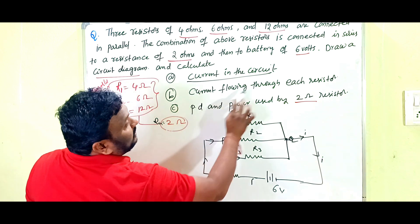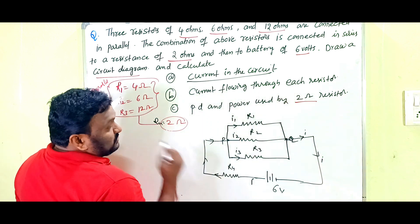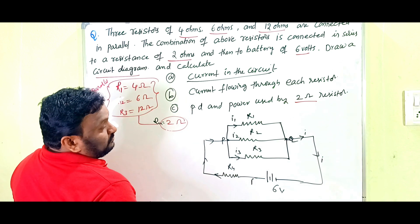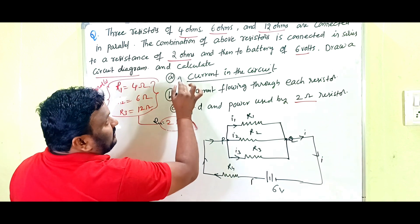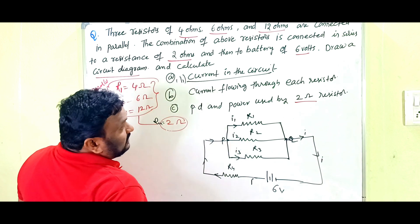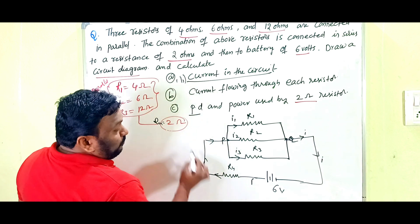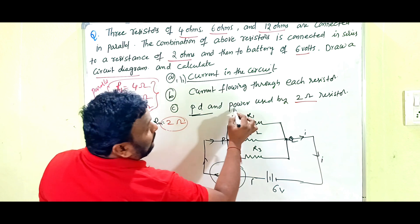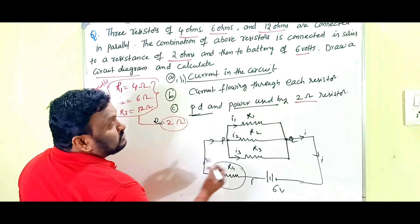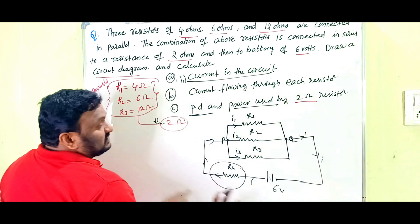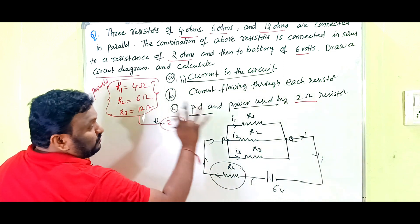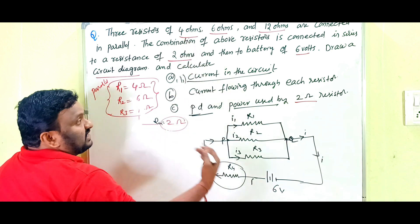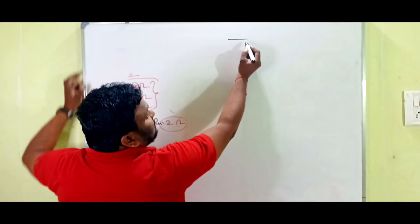We have to find out the current flowing through each resistor — that means I1, I2, and I3. First we find the total current I, then the individual currents I1, I2, I3. Next we find the potential difference across the fourth resistor and the power used by the 2 ohms resistor.